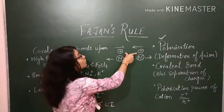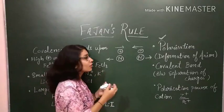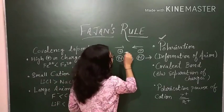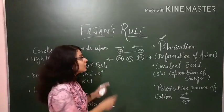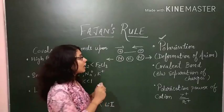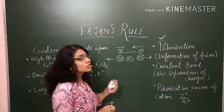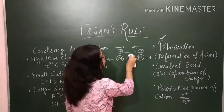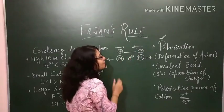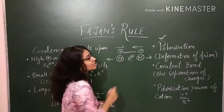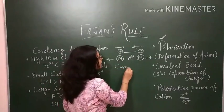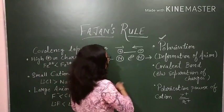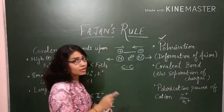When two oppositely charged ions approach each other, their positively charged nuclei repel each other, causing an accumulation of electrons between the charges. This is similar to covalent bonding, and it gives rise to covalent character in an ionic bond.